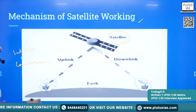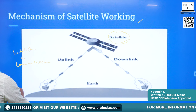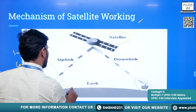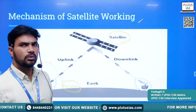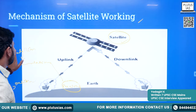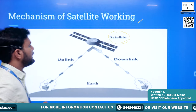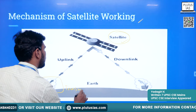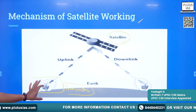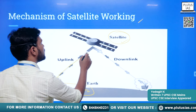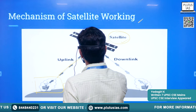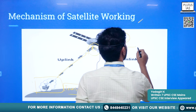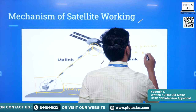With advancement in technology, powerful transmitters, receivers, and processing stations have come, and the technology has also become cheaper. The mechanism of satellites proved very useful for communication. A transmitter located at ground level sends signals to the satellite orbiting the earth. The satellite receives and amplifies the signals.